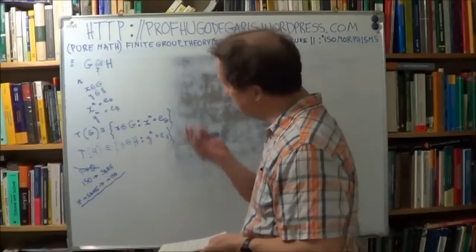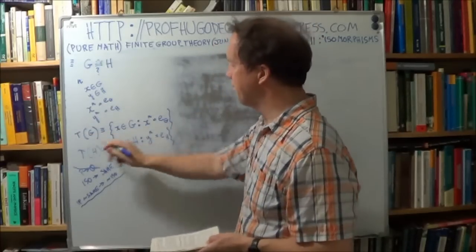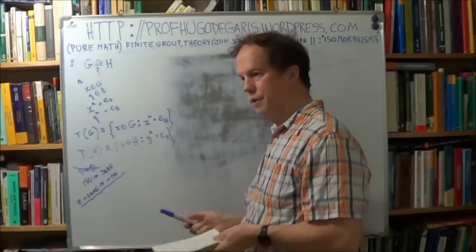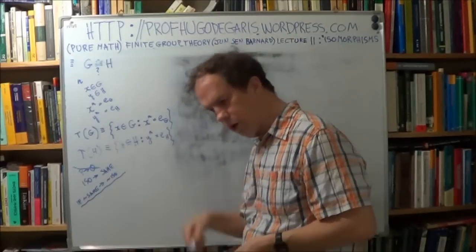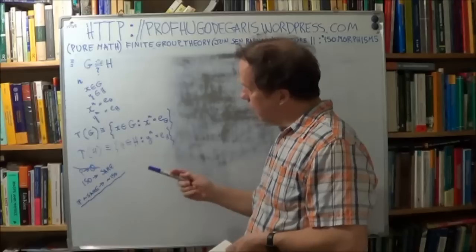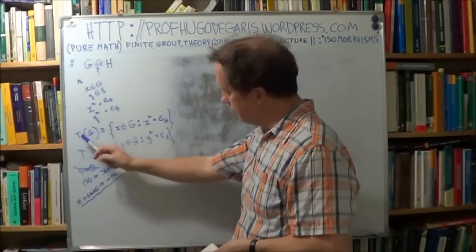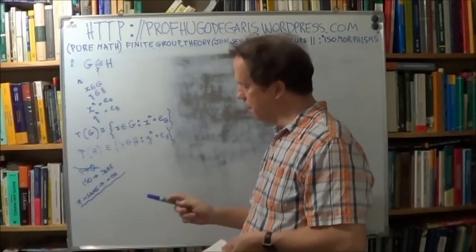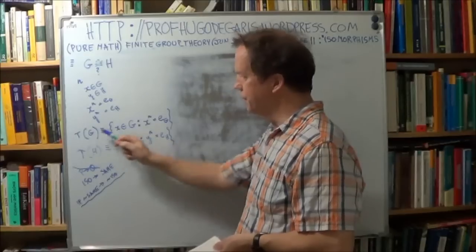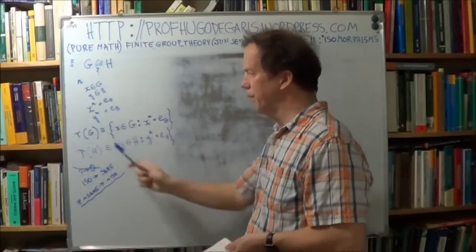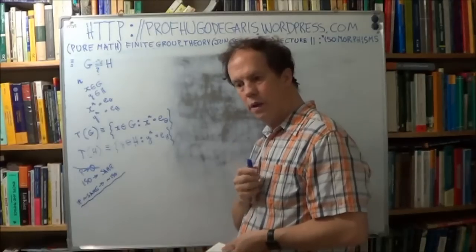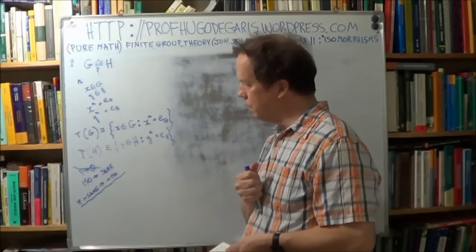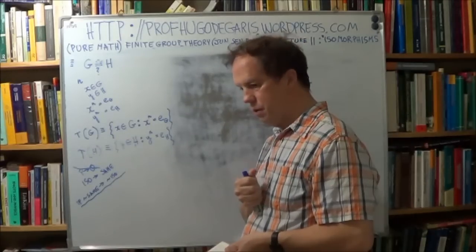So the proof is sort of in two parts. We have two sets here: t(G) is a set, t(H) is a set, and what we will try to do is prove that these two sets are equal in size, given this assumption.